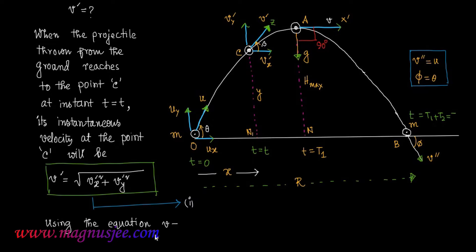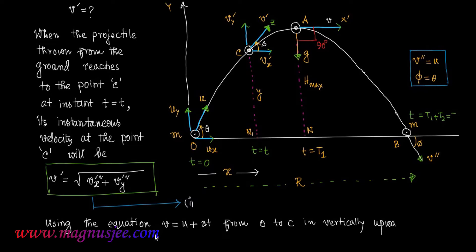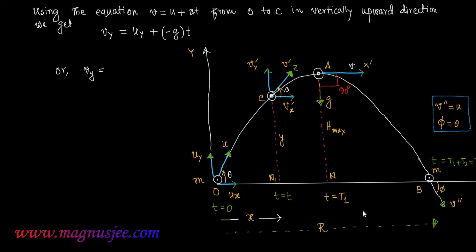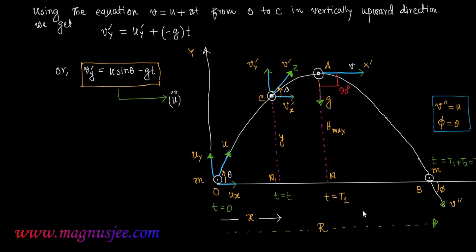Using the equation v equals u plus at, between the two points O and C in the vertically upward direction — that is along direction Oy — we get: Vy prime equals Uy plus (-g) into t. That is, Vy prime equals u sin theta minus gt, which is Equation 2. Here Uy prime equals u sin theta, meaning the vertical component of initial velocity is u sin theta, and Ux equals u cos theta, which is the horizontal component of initial velocity of the projectile.